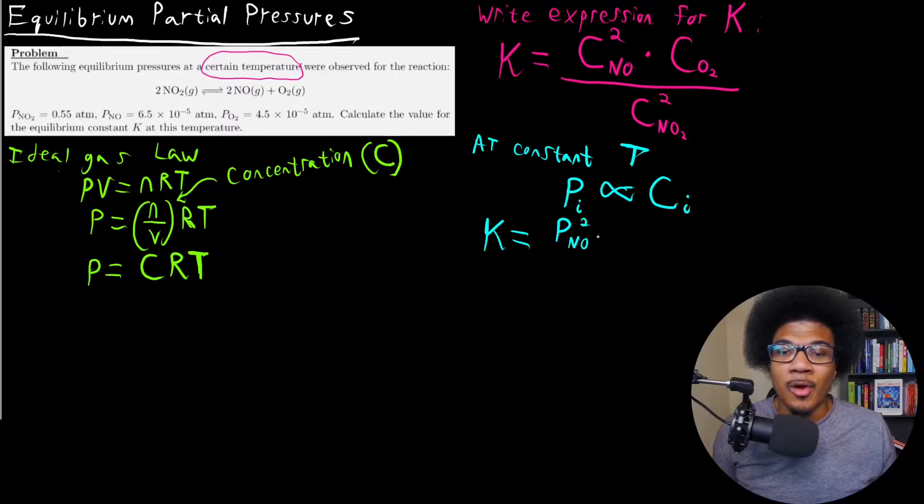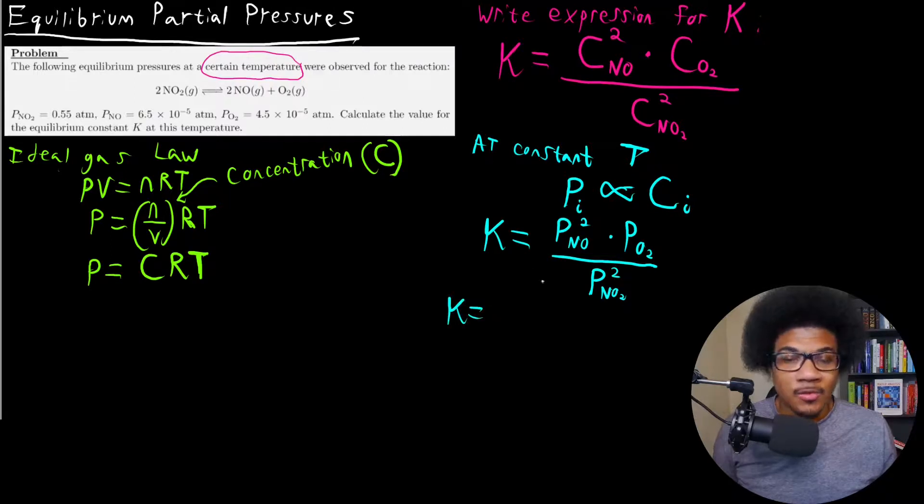So you have the partial pressure of NO squared times the partial pressure of O2 over the partial pressure of NO2 squared.